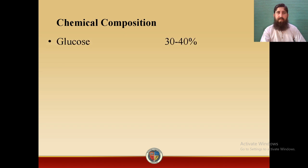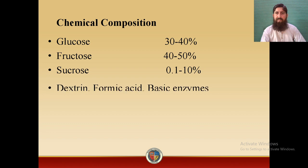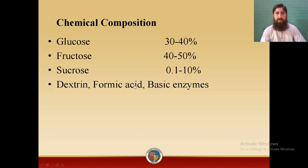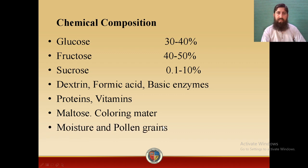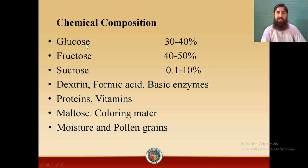Chemical composition: honey is composed of glucose (30–40%), fructose (40–50%), sucrose (0.1–10%), dextrin, formic acid, basic enzymes, proteins, vitamins, maltose, colouring matter, moisture, and pollen grains. By looking at the composition of honey, we can say that it is a suitable food for infants and elderly patients.